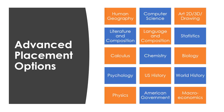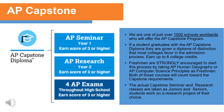Freeport High School has a wide variety of Advanced Placement courses, shown here. When completing your course request, make certain to select an appropriate course that aligns with your grade level and sequence of study. Freeport High School is not just one of two schools in the county that offers the prestigious AP Capstone program, but we are also one of over a thousand schools worldwide who offer it. If a student graduates with an AP Capstone diploma, they are given a diploma of distinction that most colleges favor in the admissions process and can earn up to six college credits. Freshmen are strongly encouraged to start this process by taking AP Human Geography or AP Computer Science Principles. The actual AP Capstone Seminar and Research classes are taken as juniors and seniors, where students work on a research project of their choice.